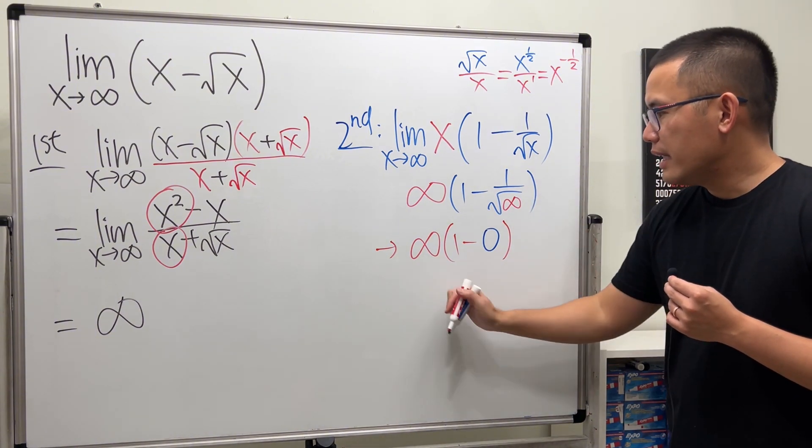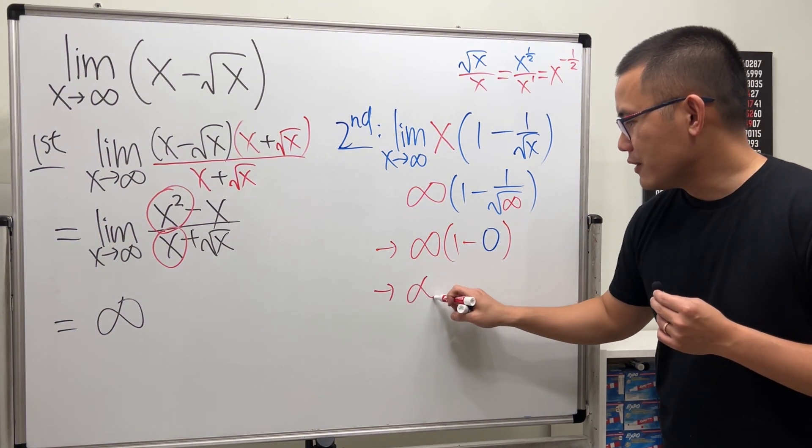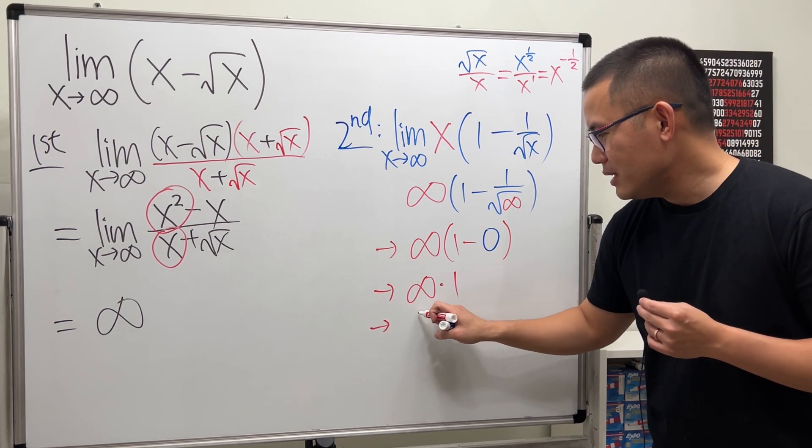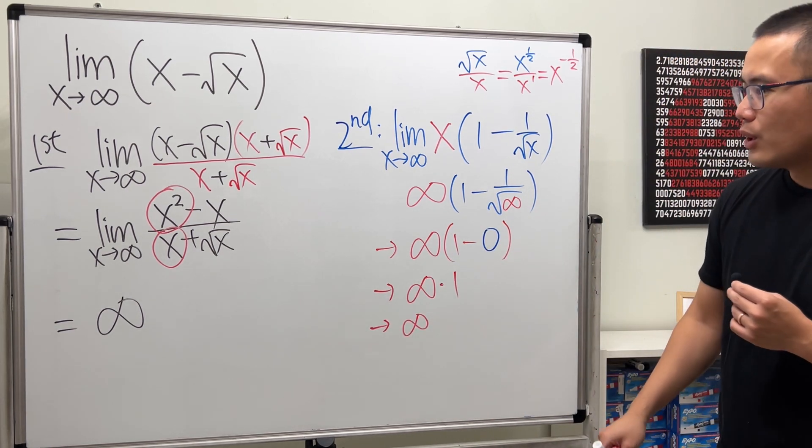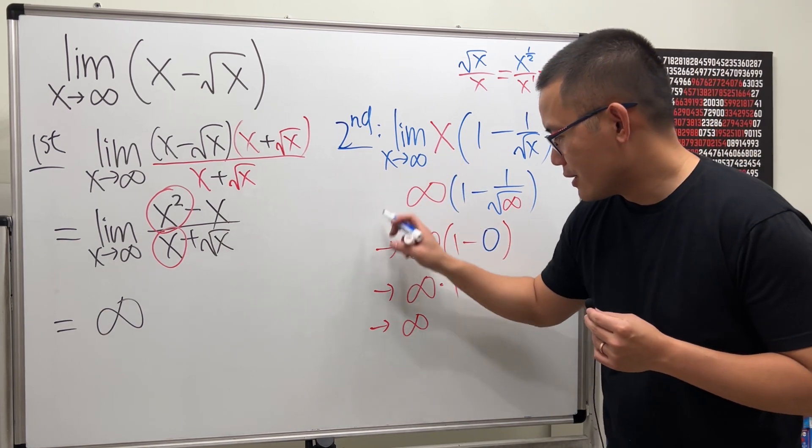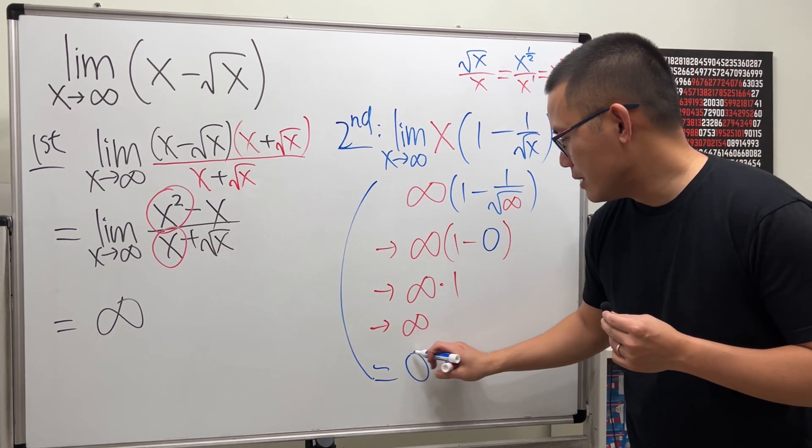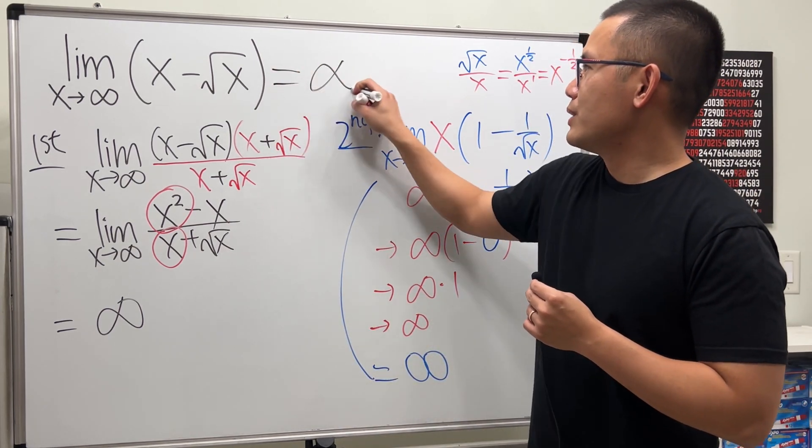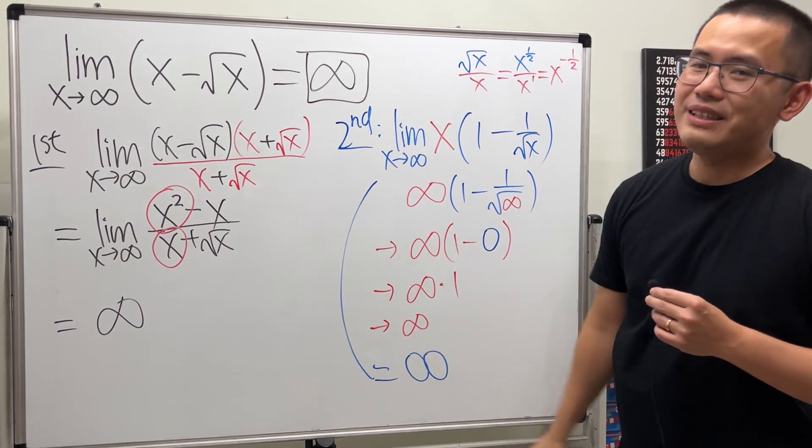And then this is just infinity times one and of course this has to be infinity. So either way, you get the limit being infinity. So depending on which way you want to do it, the answer is infinity.